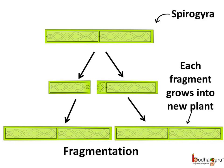Spirogyra is one kind of algae which looks like small green strings. It floats on the surface of ponds or in dirty drains. These adult organisms just break into two or more pieces, and each piece grows into a new plant. Not only in Spirogyra, but in many other plants too, the adult plant breaks up into several fragments and each piece grows into an independent plant. This type of reproduction is called fragmentation.